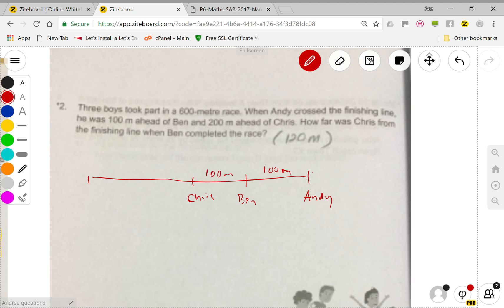The distance is also 100 meters, so 100 meters here and 100 meters here. This whole race is 600 meters, so if this is 100 meters and 100 meters, what's left over here will be 400.